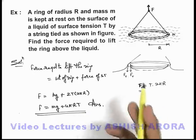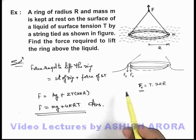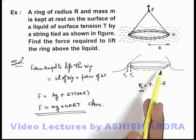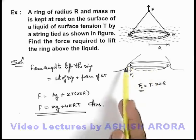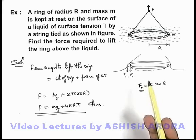And this example is also similar to the just previous example we have taken in which there was a rod. And in this situation, rather than a rod, we have taken a ring. So the length of line on which the surface tension force is acting is changed. Remaining, the concepts are almost the same.